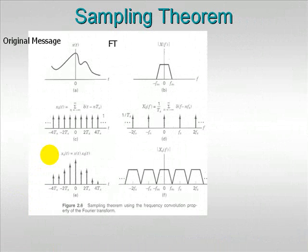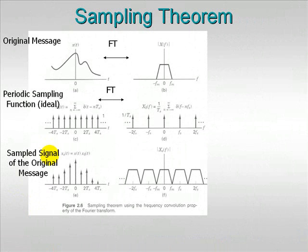So, in summary, what we have is the original message and its corresponding Fourier transform. Periodic sampling function. In this case, we'll consider it as an ideal impulse train. And we have its corresponding Fourier transform. Then we have the sampled signal of the original message. And we see that its Fourier transform consists of multiple spectra of the original signal.